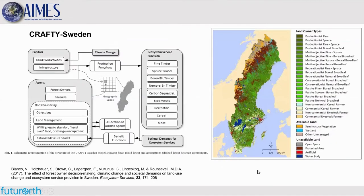Here is a realisation of CRAFTY created for Sweden. It looks at how you can model the spatial patterns and distributions of different types of forest owners. We focus on forest systems within this particular implementation. You can see different types of owners who represent different objectives — multi-objective, productionists, conservationists — but also the different types of tree species that different owner types are interested in managing and planting within these different environments.